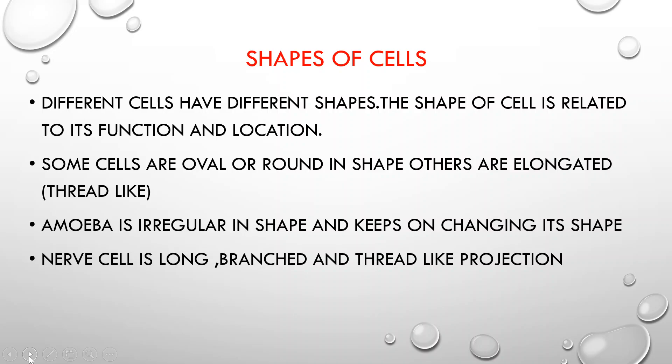We learned that the lowest level of organization is the cellular level - the cell is the structural and functional unit of life. To observe cells, we use a magnifying glass, also called a simple microscope. However, to see particular shapes and structures clearly, we need to use a compound microscope.